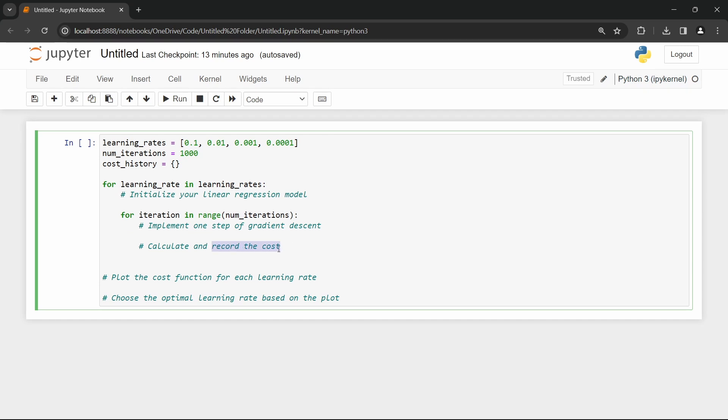Then finally, when we have done this for every learning rate, we can plot the cost and function of the amount of iterations for every learning rate and choose the learning rate that converges in the least amount of steps without oscillating or overshooting.